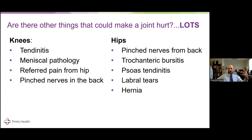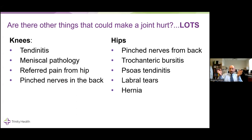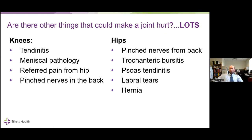For hips, it's a similar list. Pinched nerves from the back. Trochanteric bursitis is oftentimes more pain at the side of the hip — people will say it hurts when they lie on that side at night, or as seats have moved from bench seats to bucket seats that pinch the sides of the hips. Psoas tendonitis can cause groin pain. The labrum in the hip is fairly analogous to the meniscus in the knee — it's a soft cartilage that can have tearing. And you can have a hernia in your lower abdomen or inguinal crease that can also cause groin pain.